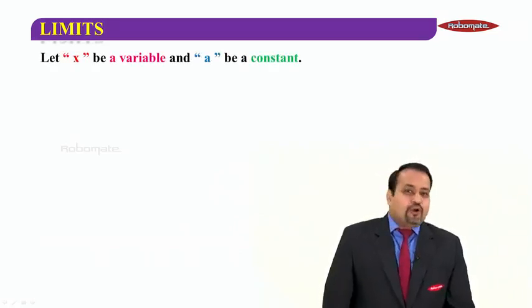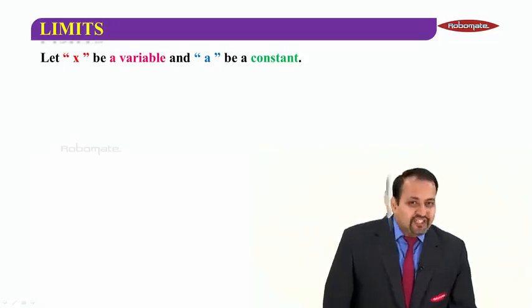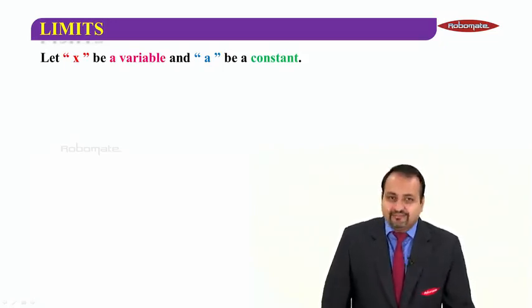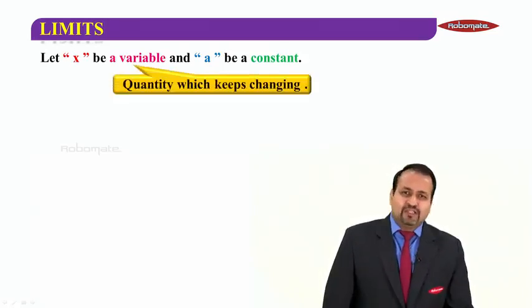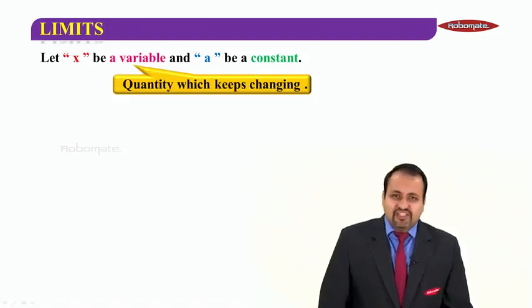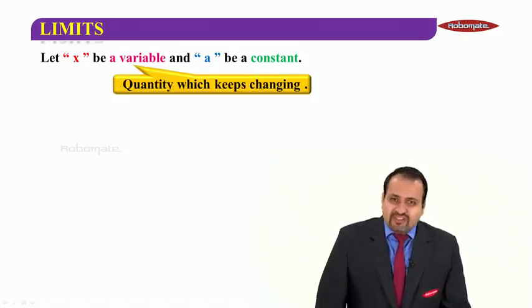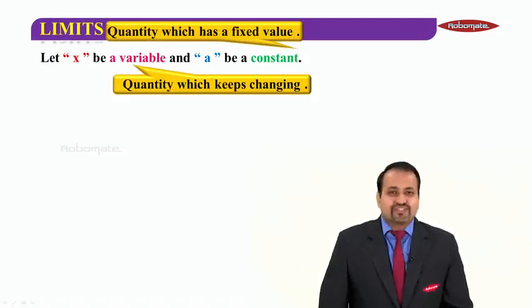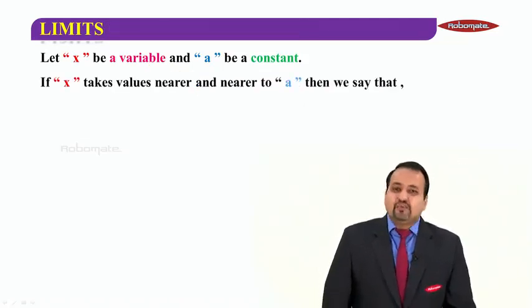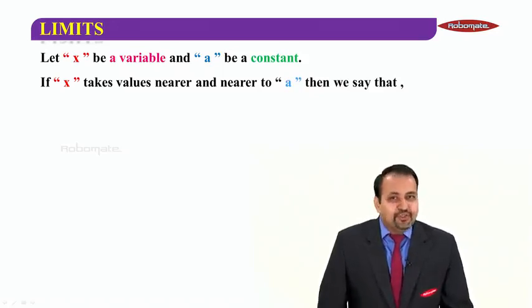Let us now talk in case of general elements like X and A. Let X be a variable. What is the meaning of variable? Quantity which keeps changing and A be a constant. What is the meaning of constant? Quantity which has a fixed value.